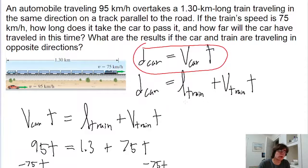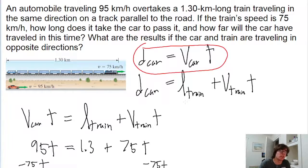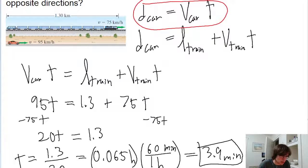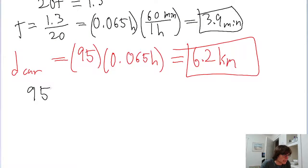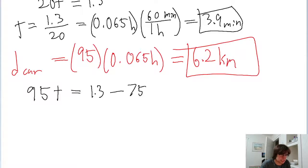The next part of the problem asks what happens if the car and the train are traveling in opposite directions. We'll use the same method, but now the signs in front of the speeds are switched. In the first part, the car needed to travel the length of the train plus the distance the train travels. Here it's the opposite — the car needs to travel the length of the train minus the distance the train travels. So the equation becomes 95 kilometers per hour times t equals 1.3 kilometers minus 75t.